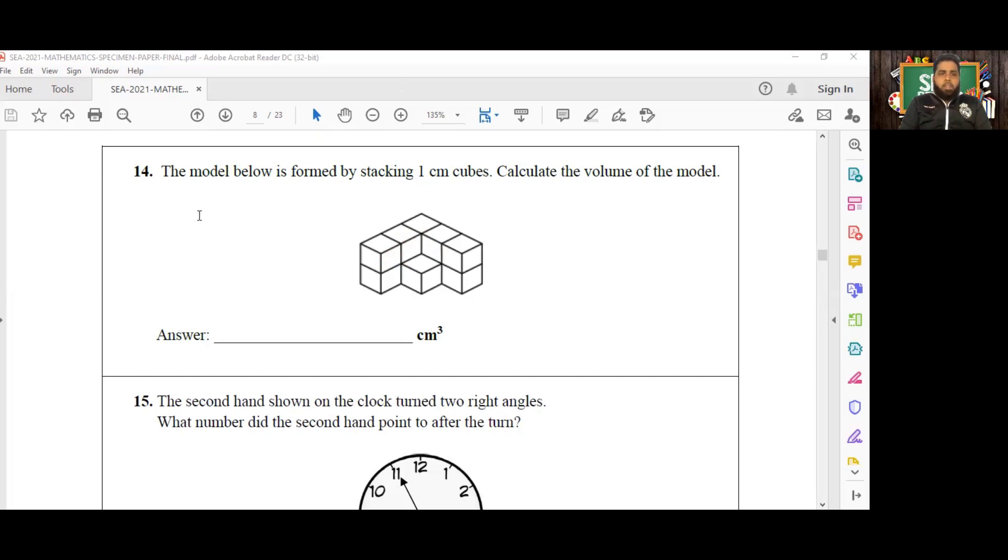So we have 11 blocks and we have to basically calculate the volume of the model. The volume can be broken up into 11 one centimeter cubes. The volume of one cube would be equal to one times one times one, which will give us one cubic centimeter. So that's the volume for one block.